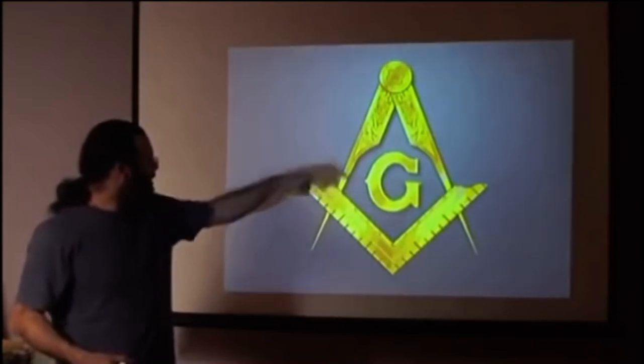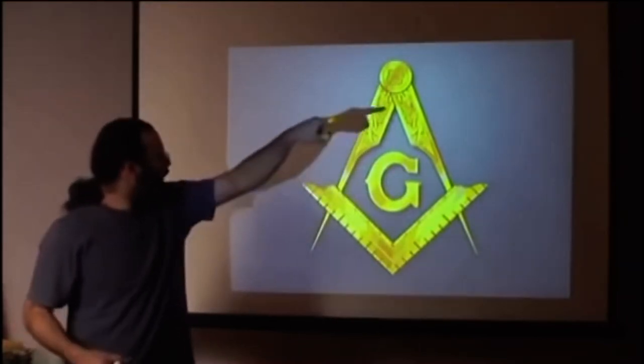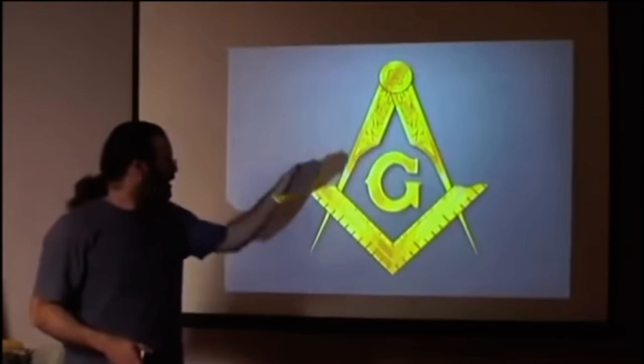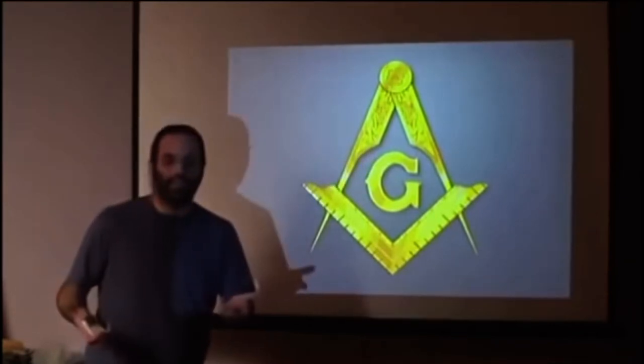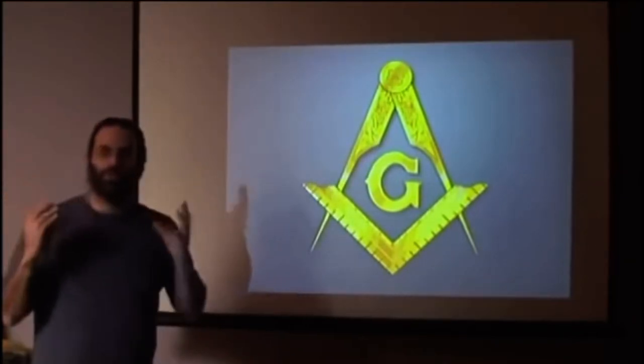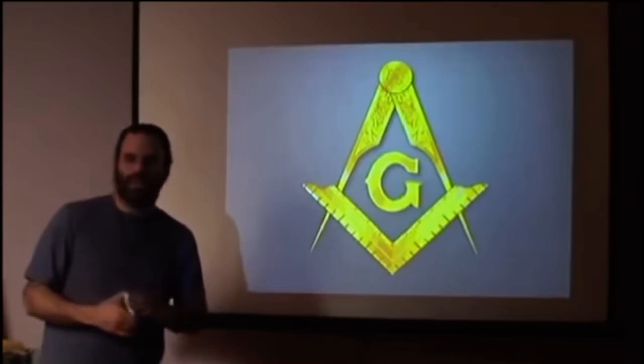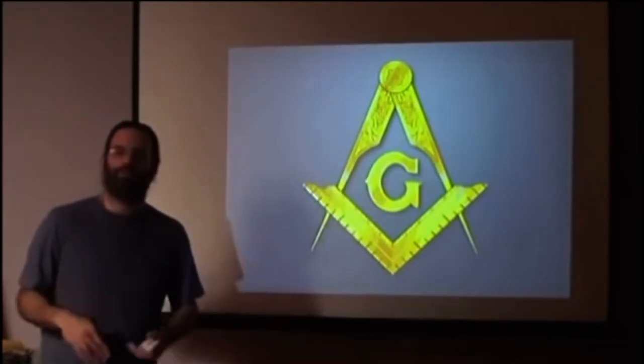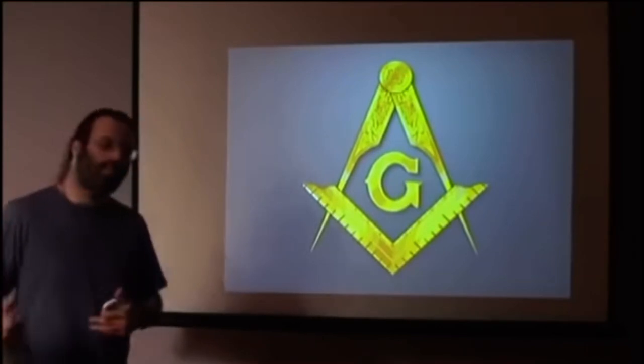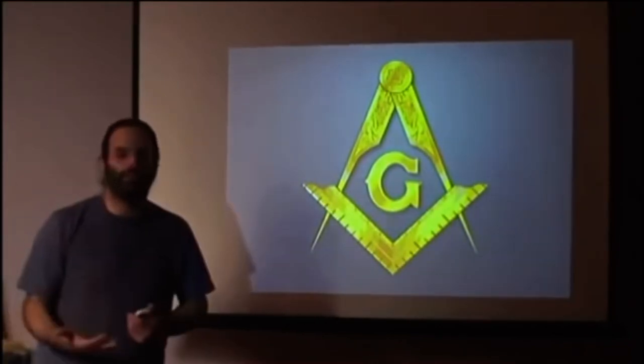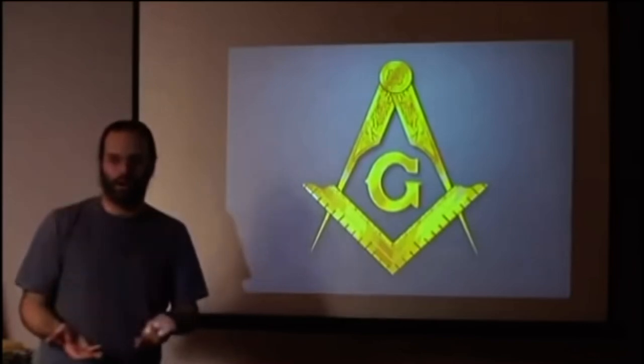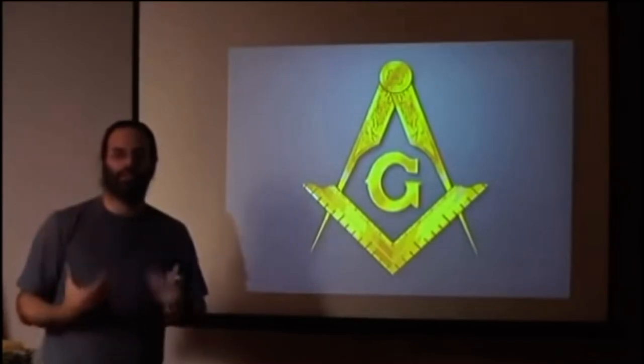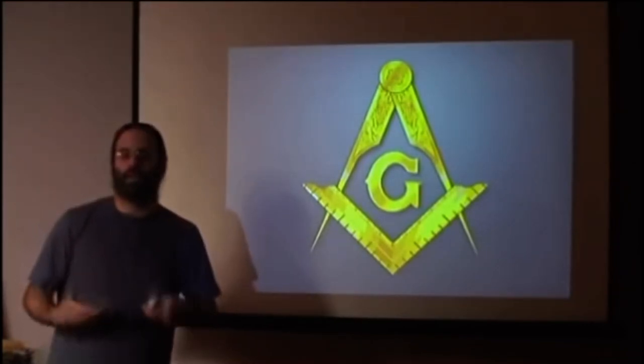You have the neocortex with its two hemispheres being the compasses. And you have the midbrain, that which gives birth to the conscience, care, as the G in the middle of the two. It represents the goddess, the grand architect of the universe, which is care. That's what creates our experience, what we care about.